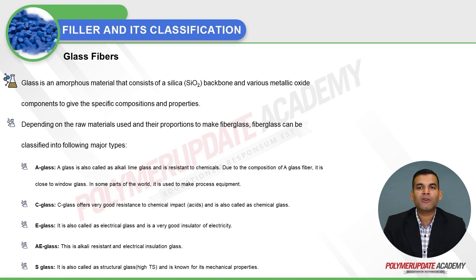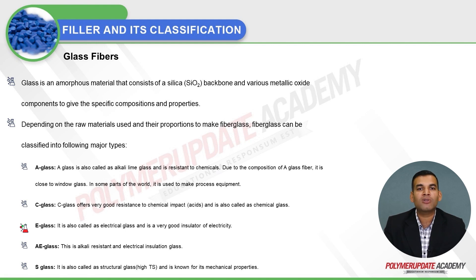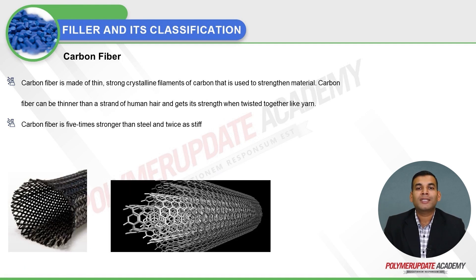Glass fibers are made from an amorphous material consisting of a silica backbone and various metallic oxide components that give specific compositions and properties depending on the raw materials and their proportions. Fiberglass can be divided into major types: A-glass, C-glass, E-glass (also known as electrical glass, a very good electrical insulator), AE-glass (alkali-resistant and electrically insulating), and S-glass (structural glass with high tensile strength, known for its mechanical properties).